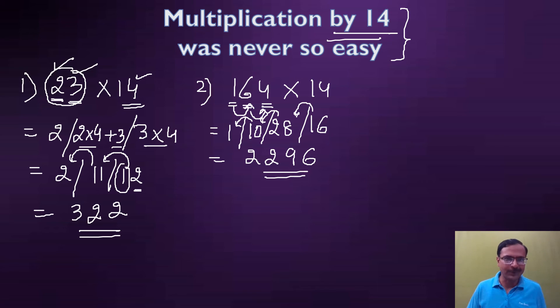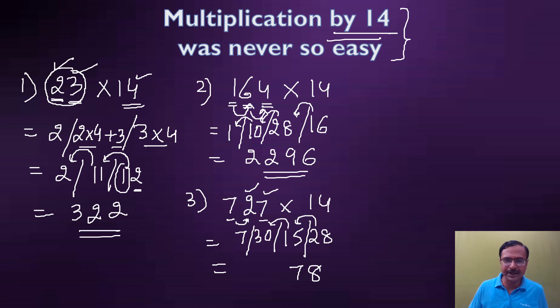Let's take a larger example, say 727 multiplied by 14. 7 times 4 is 28. 2 times 4 is 8, 8 plus 7 is 15. 7 times 4 is 28 plus 2 is 30. And finally we have the 7. So 8, 2 carried forward 17 means 7, 1 carried forward so 31 means 1 and 3 carried forward. 7 plus 3 is 10, so 10178 happens to be the product of 727 and 14.